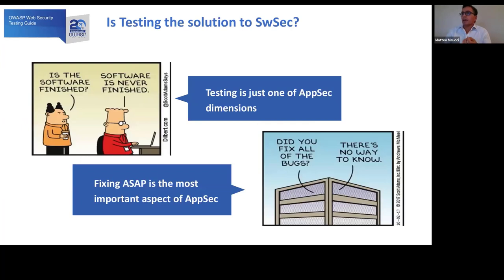Talking about the Testing Guide, the question is: is testing the solution to software security? The answer in brief is no. Testing is just one dimension of the software security problem. Companies need to grow in other dimensions too, like standards, processes, awareness, and building teams able to fix vulnerabilities as soon as possible. It is important to adopt new strategies and grow a culture of software security.